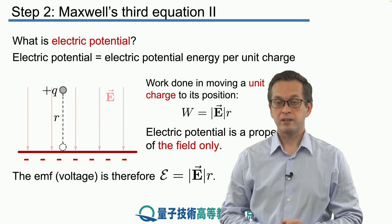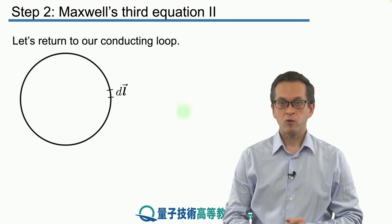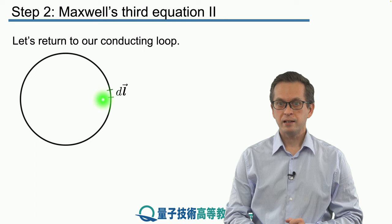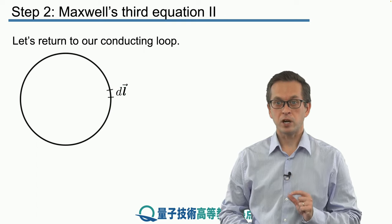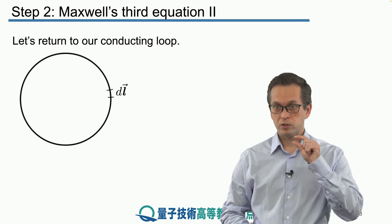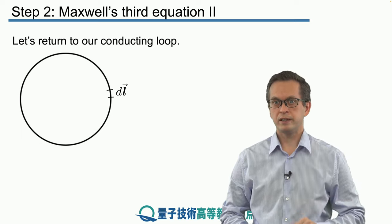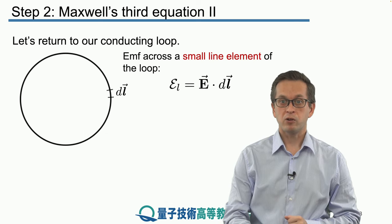Now where does that leave us? Let's return to our conducting loop. And now what we can do is we can divide this loop into these very small chunks, these very small lengths, denoted by dl. And really what you should be thinking about is that they're infinitesimally small. And we ask what's the EMF across this distance?